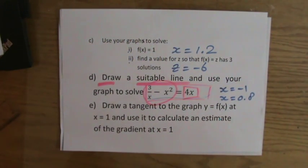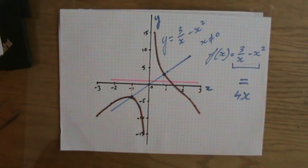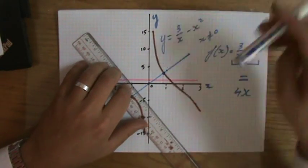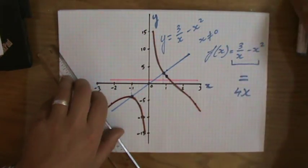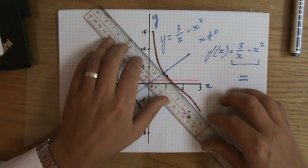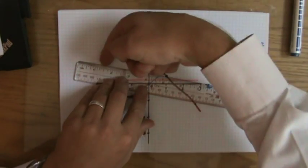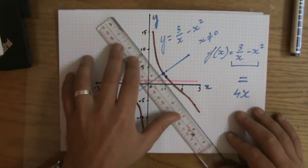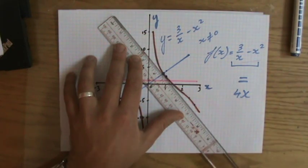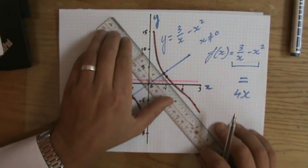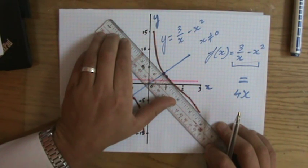Final question: draw a tangent to the graph at x = 1 and use it to calculate an estimate of the gradient. A tangent is what I call a touch-line. At x = 1, I find my graph and draw a line that just barely touches it at that point — not cutting through the graph, just touching it. This requires accuracy, but you get points for it.